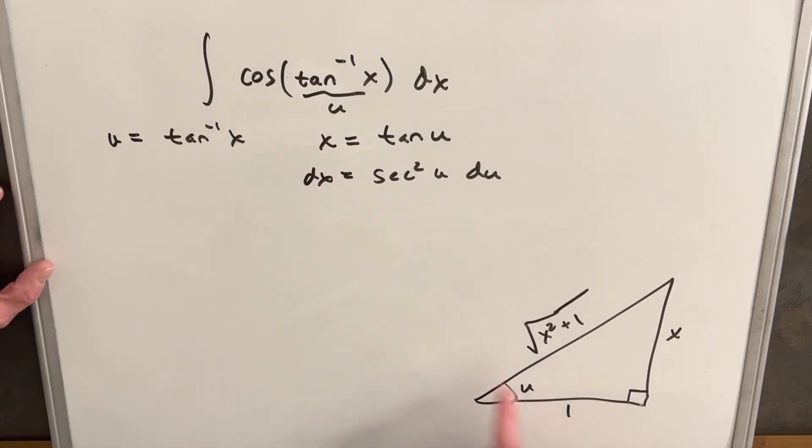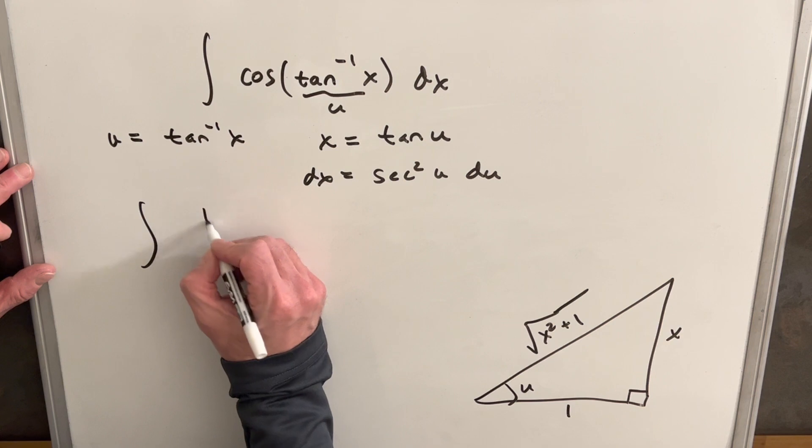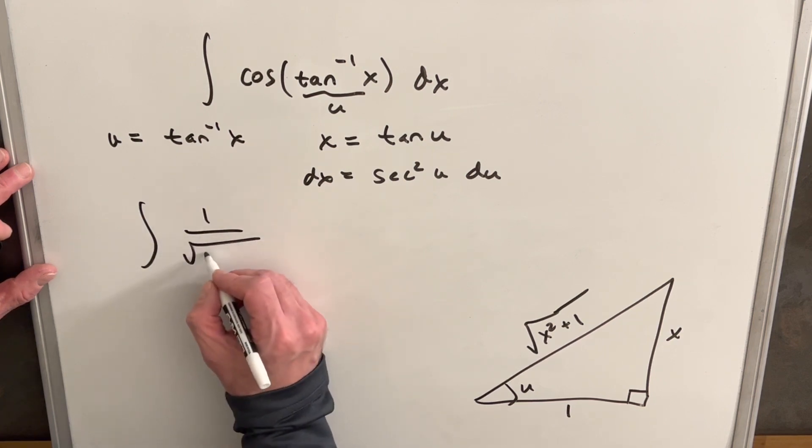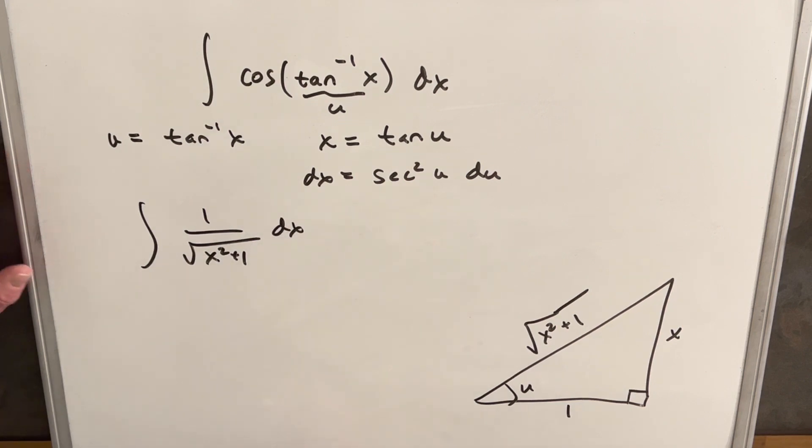and notice cosine of u here is going to be opposite over hypotenuse. No sorry adjacent over hypotenuse. That's 1 over x squared plus 1. So we can actually just write our integral as square root of x squared plus 1 dx. And so instead of dealing with the trig functions we could just go to integrate this.